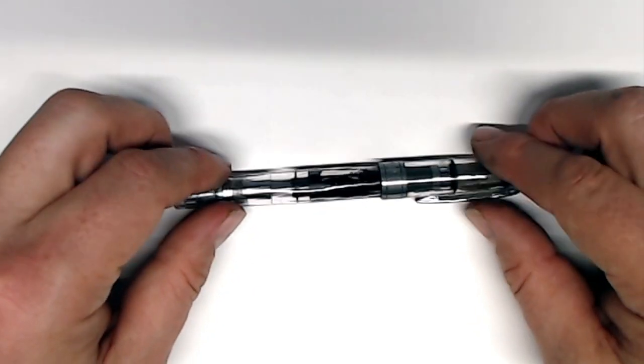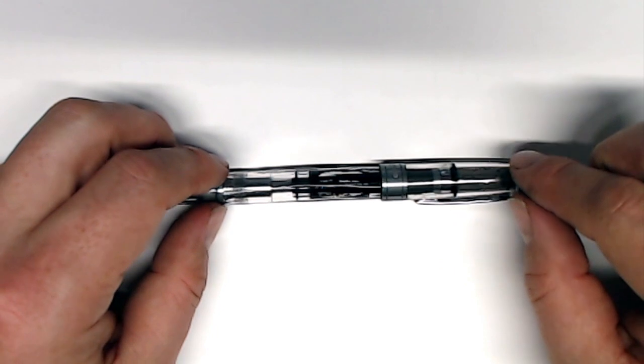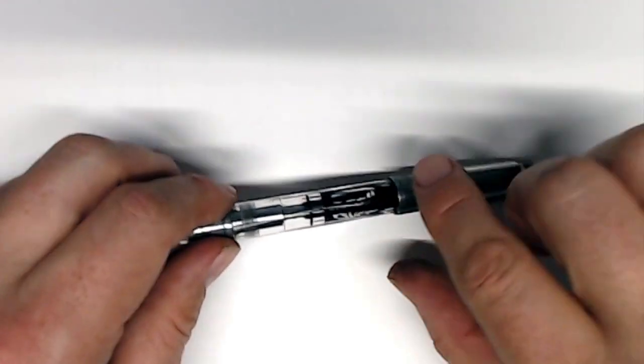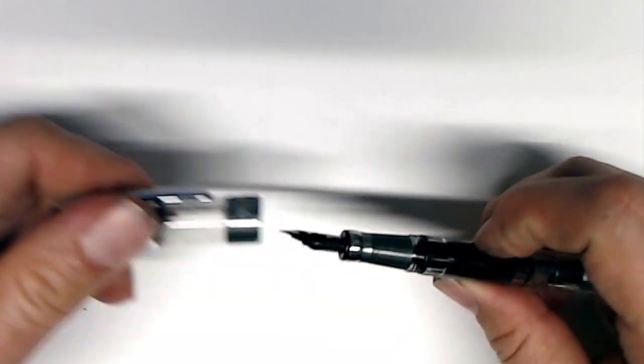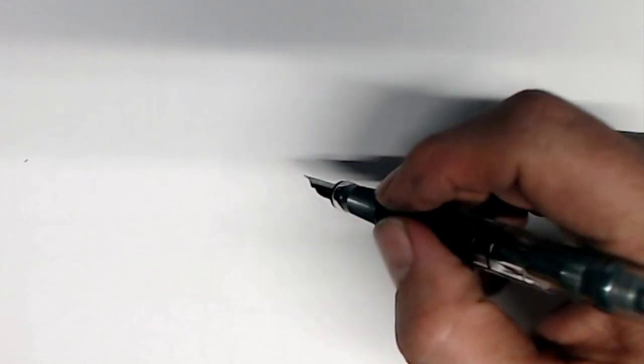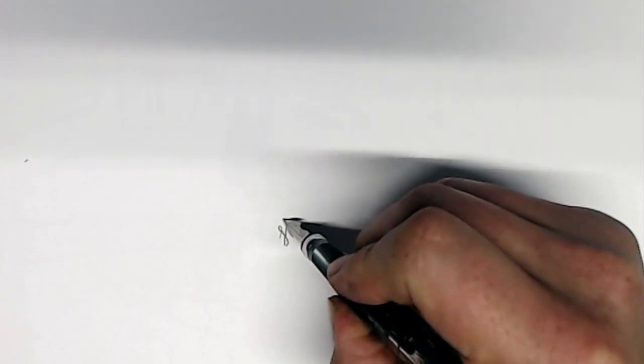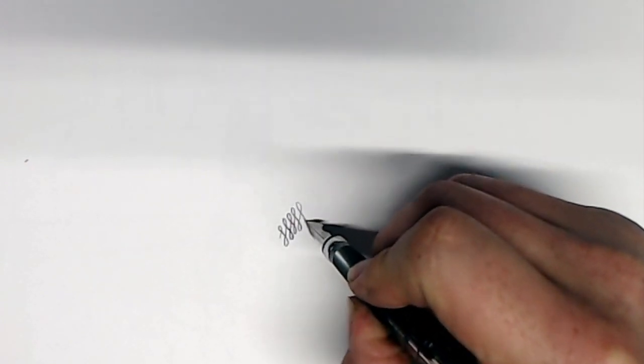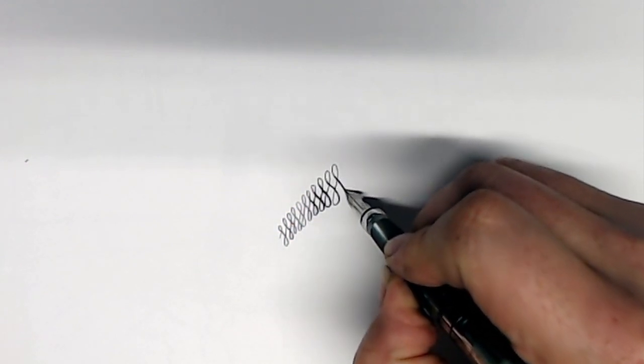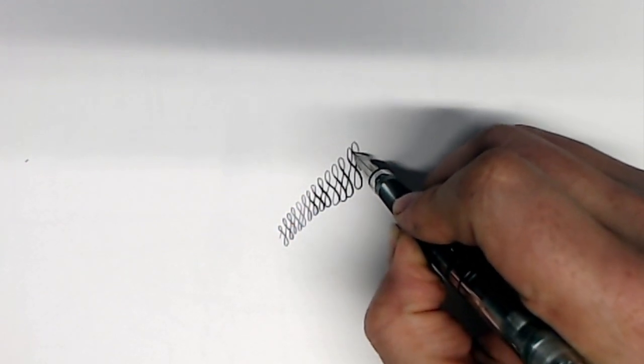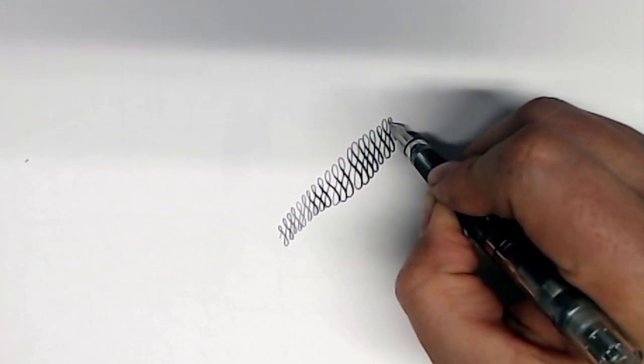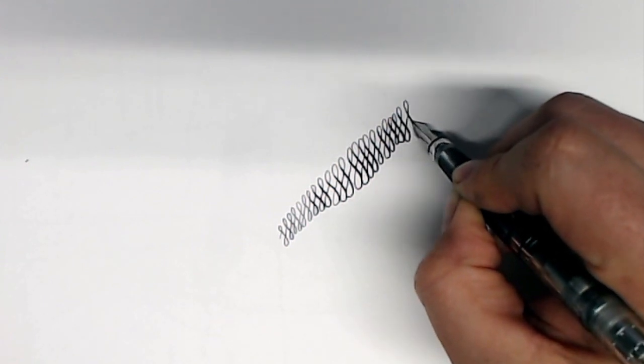This is a Twsbi 580AL in the nickel gray. The Ultraflex nib easily slides in and works absolutely perfectly, which is really surprising because the plastic feeds on these pens are not designed to provide adequate ink flow for flex, yet for some reason it manages to keep up. I don't know if it's the size of the nib that has an effect, but absolutely no railroading issues at all, and I'm giving this a pretty fair amount of pressure.